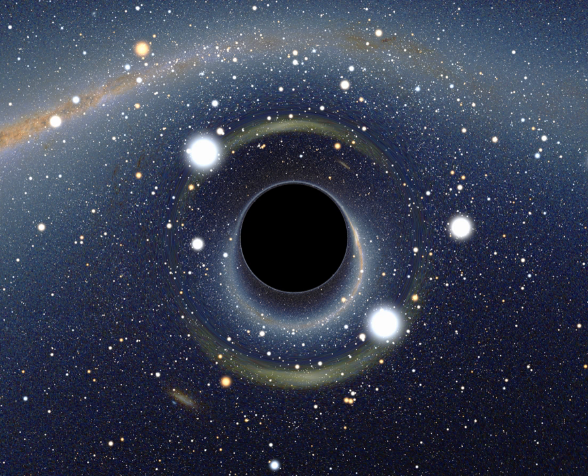General relativity predicts that any object collapsing beyond a certain point, for stars this is the Schwarzschild radius, would form a black hole inside which a singularity covered by an event horizon would be formed.